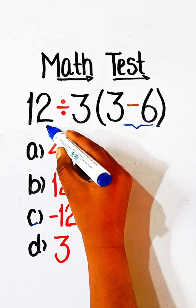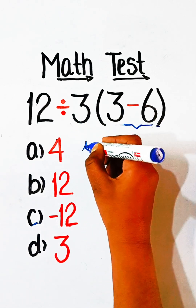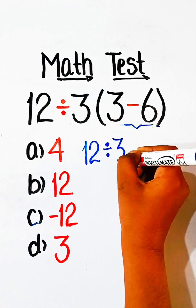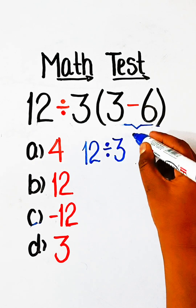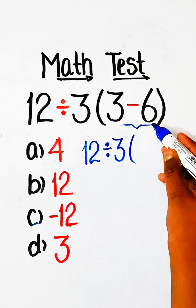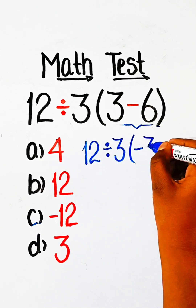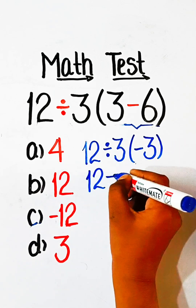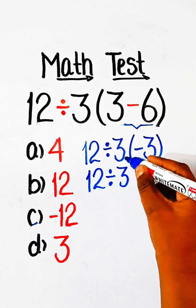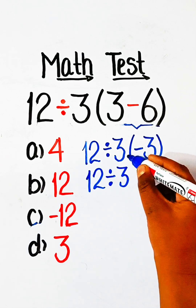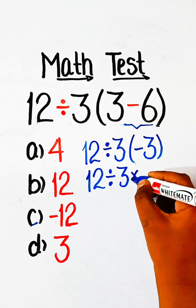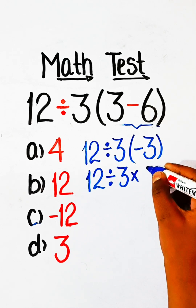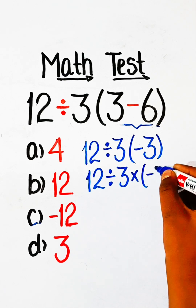We write it the same as it is: 12 divided by 3, and 3 minus 6 is minus 3.